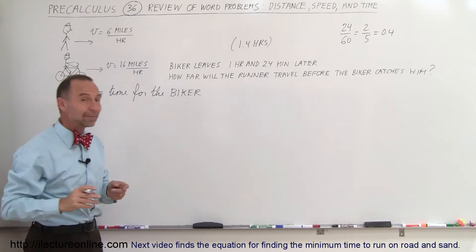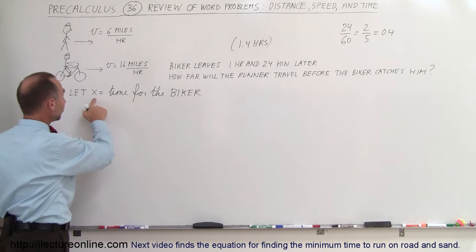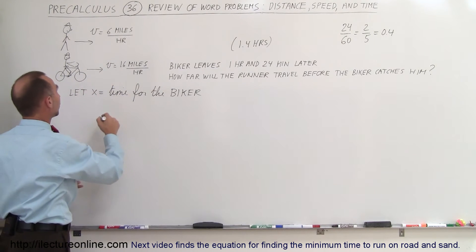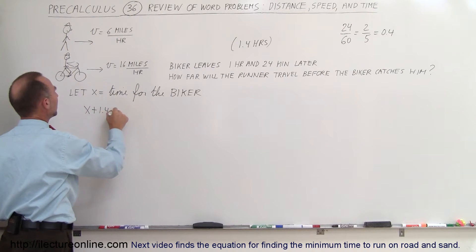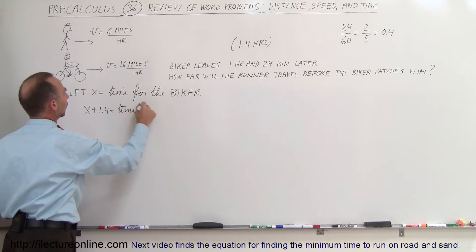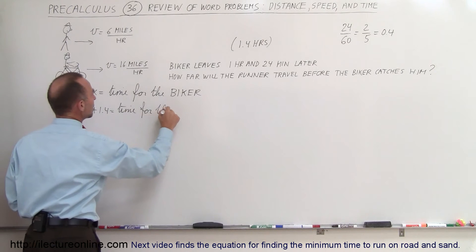So in that case, the amount of time that the runner stays on the road will be x, the amount of time for the bike, plus 1.4 hours. So x plus 1.4 equals the time for the runner.